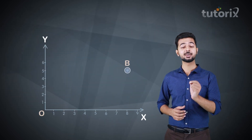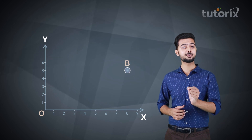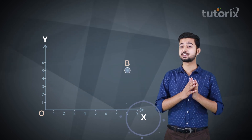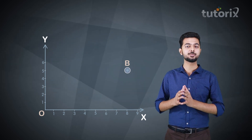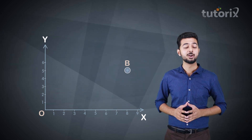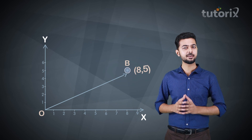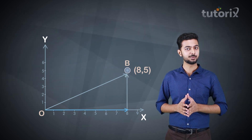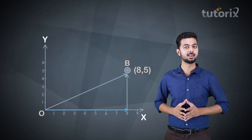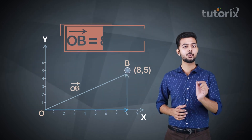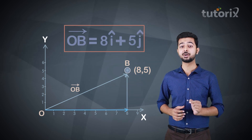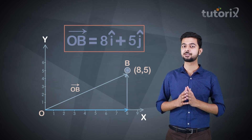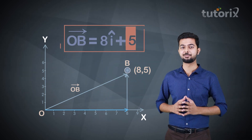Now try to write the position vector of car B in terms of its x and y components. Car B travelled 8 km along x and 5 km along y, so vector OB equals 8î + 5ĵ.